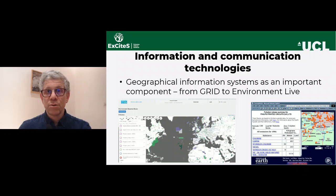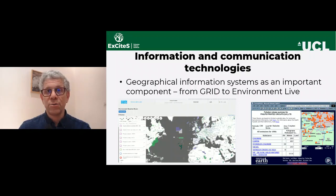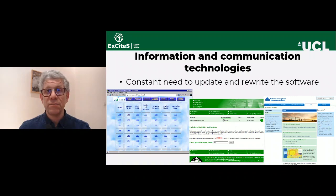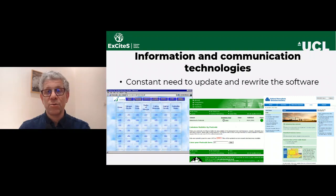Within information and communication technology we also see the importance of geographical information — GIS was important for systems such as GRID, the early system mentioned in 1982 by the UN Environment Programme, the innovation by Friends of the Earth with Factory Watch, and current systems like Environment Live used by the UN Environment Programme. We also see the constant need to update and rewrite software — the system from 1997 needed an update around 2005-6, then again today, with probably two more updates in between.